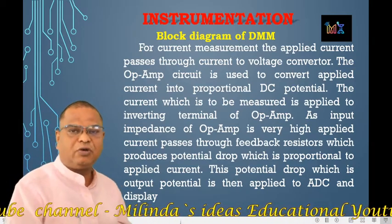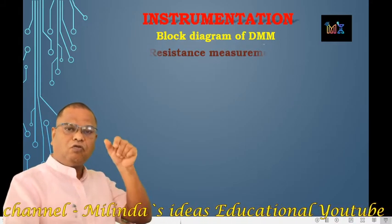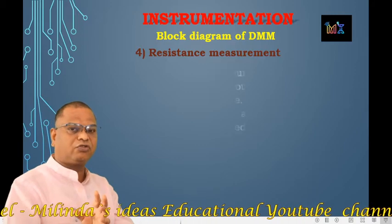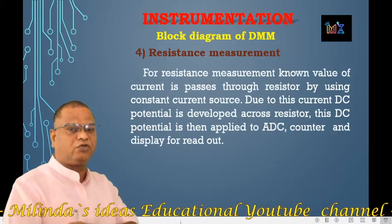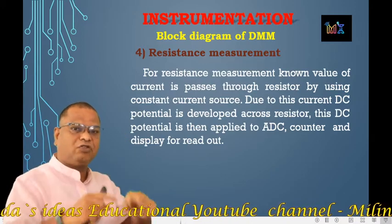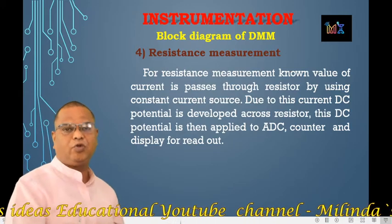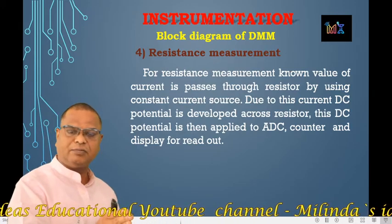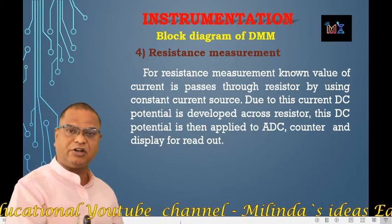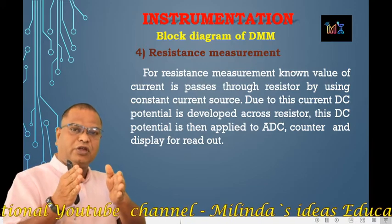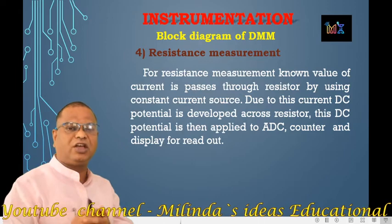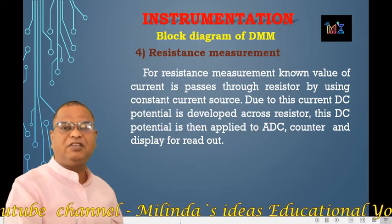The next block is resistance measurement. For the measurement of resistance, we require a constant current source. The constant current flows through the unknown resistance, and across that resistance, due to Ohm's law, a potential drop is developed. Since V = IR and the current I is constant, the potential drop is proportional to R. When the constant current flows through the resistance, we get a proportional potential drop, which is a DC potential.